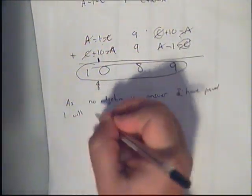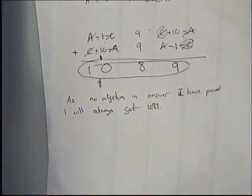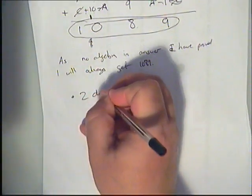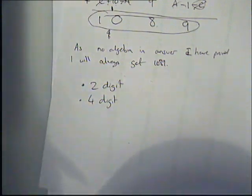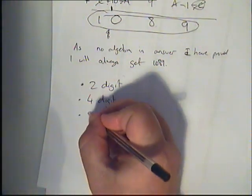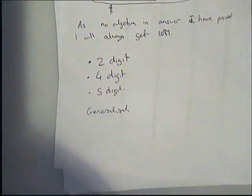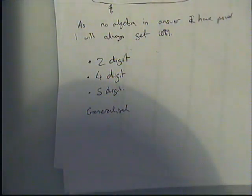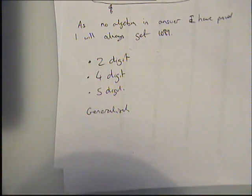I have proved I will always get 1089. Ways you could extend this: what happens for two-digit numbers? What happens for four-digit numbers? Sometimes you might not always get the same answer and might need to play with that. What about five-digit numbers? Can you come up with a generalized rule — so that if I told you I had a seven-digit number, you'd be able to tell me how many answers there could possibly be and what those answers would be? You might spot some really interesting patterns. I hope you enjoyed and found that useful. Thank you, bye.